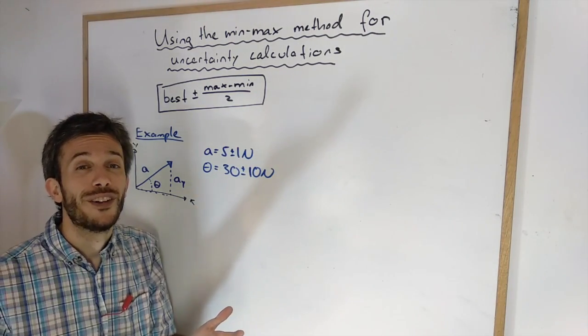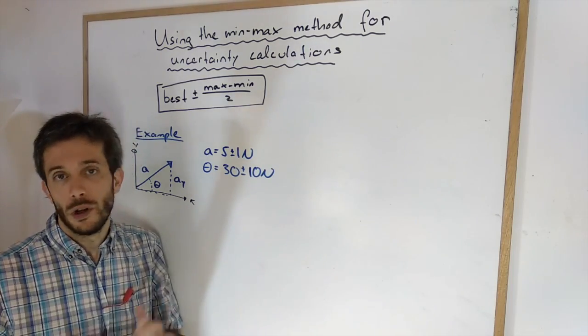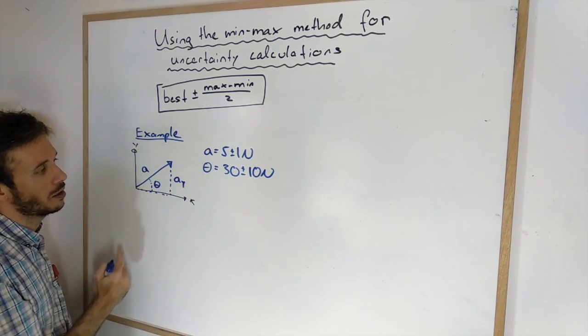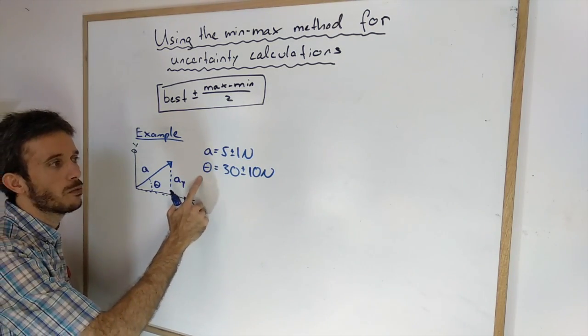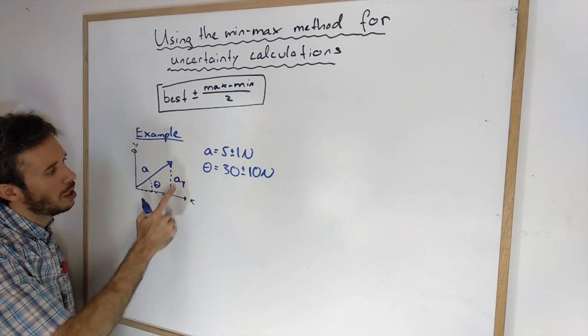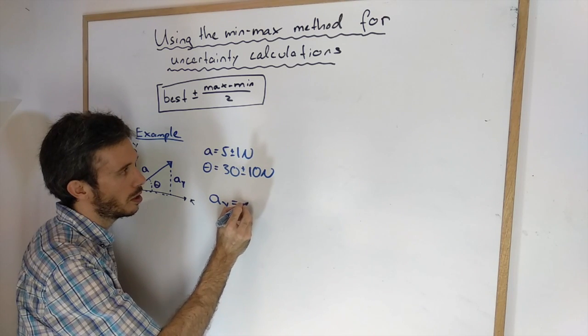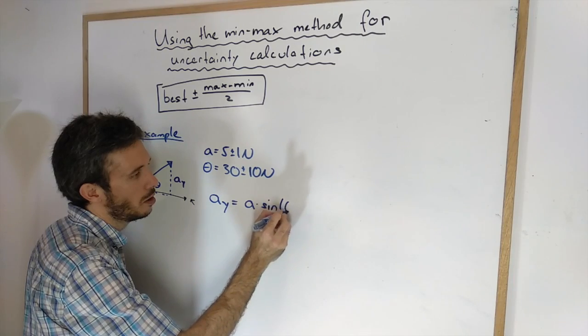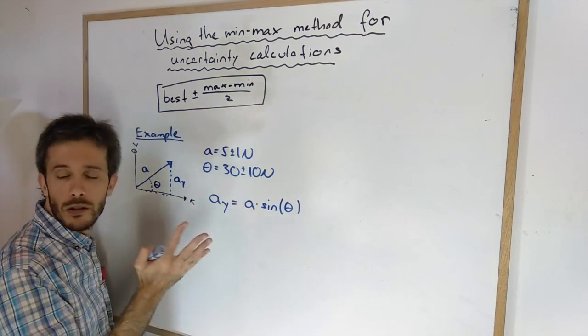Now the question is what do you do if it gets more complicated? For example, if you have a vector of length a at an angle theta and your length of the vector has an uncertainty as well as the angle, and what you want to do is figure out the y component of the vector. So a_y of course is a times sine of the angle. So I have multiplication but on top of that I have the sine operation. So what do we do?